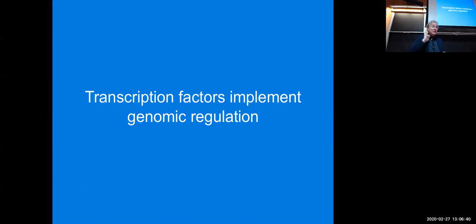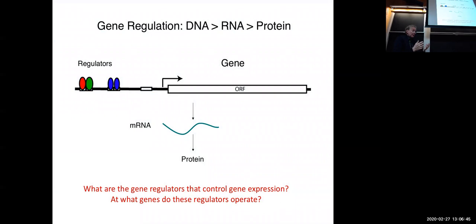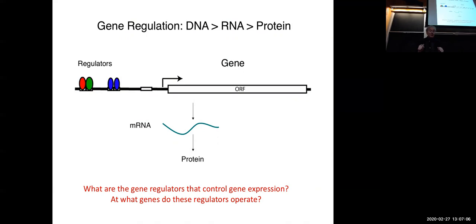As you recall, gene regulation is at the center of controlling the transcribed and ultimately translated genome to produce proteins — proteins that affect various cellular function. Regulators bind proximal to these genes, and we'll see throughout the course what proximal means, and regulate the activity of genes either positively or negatively.